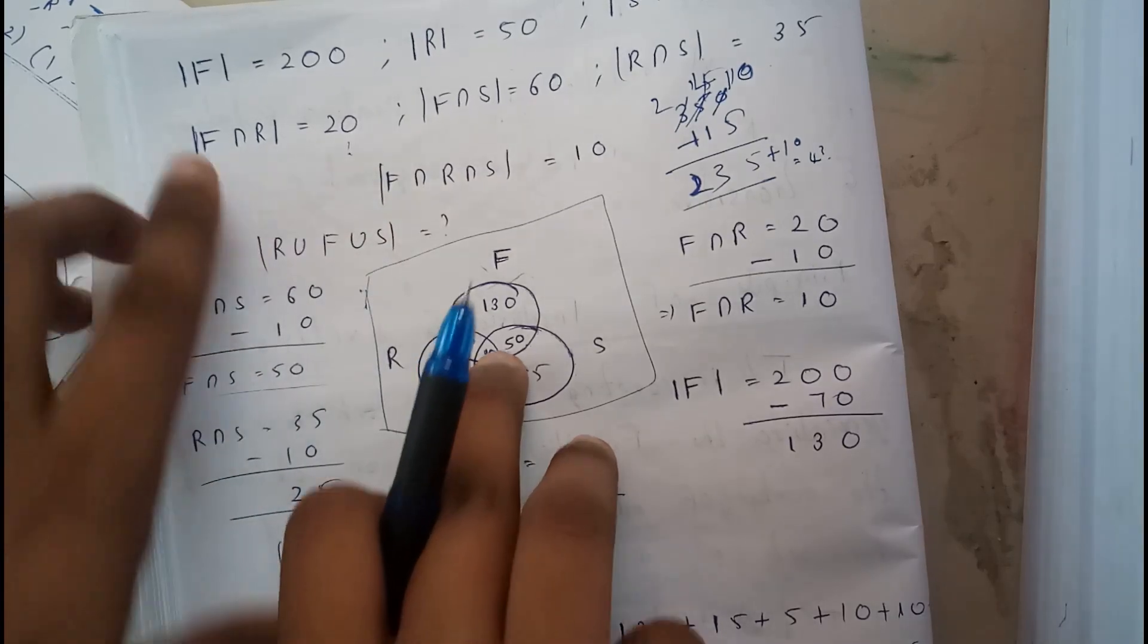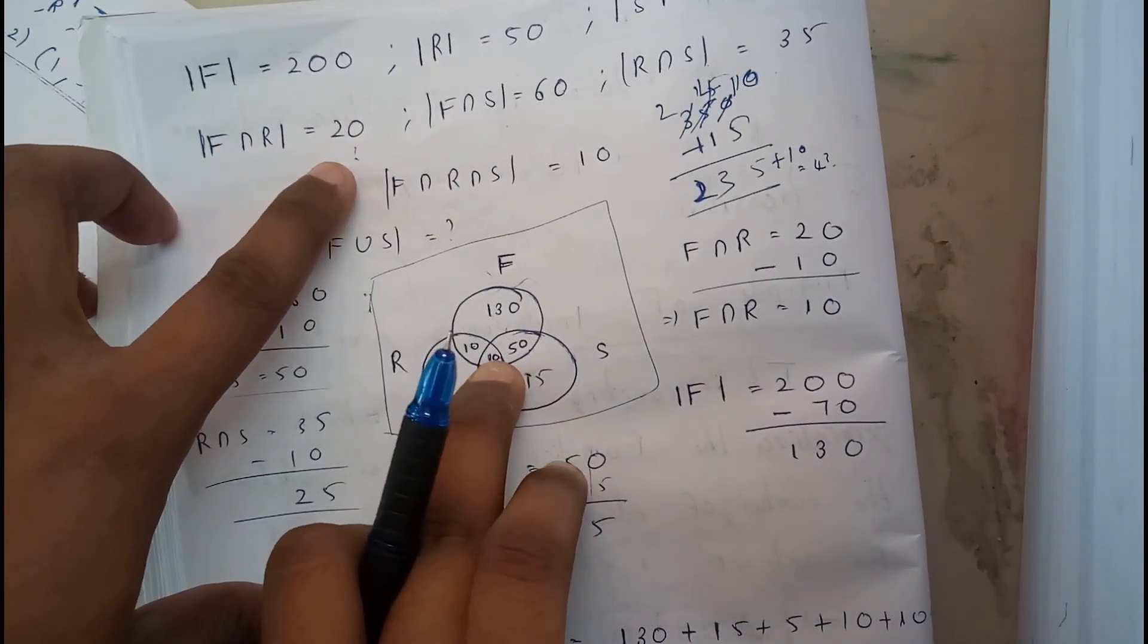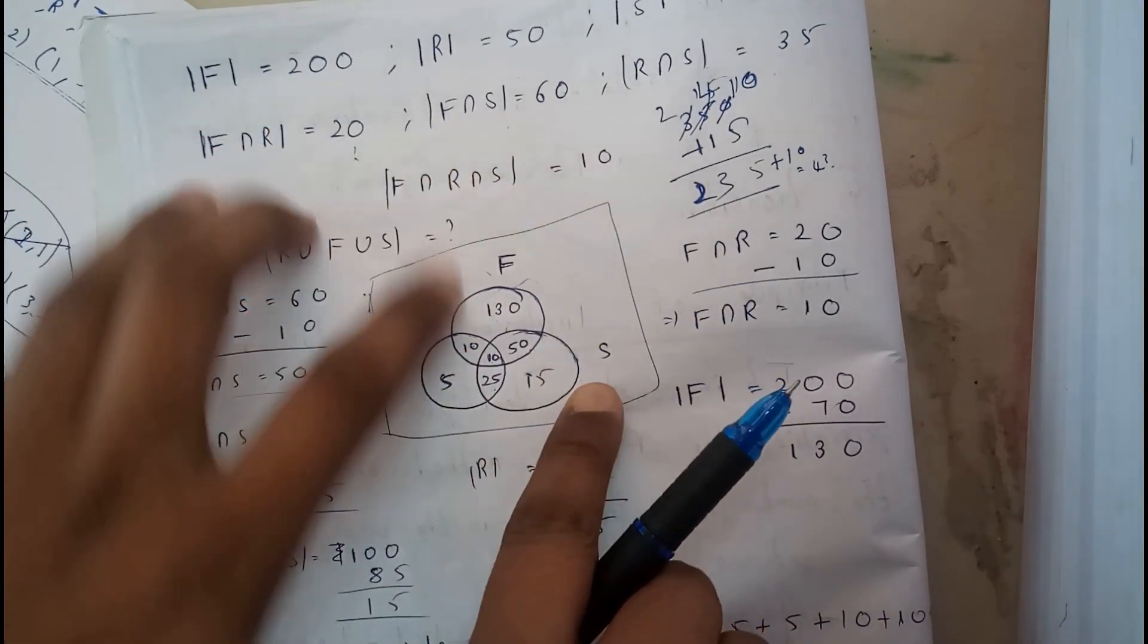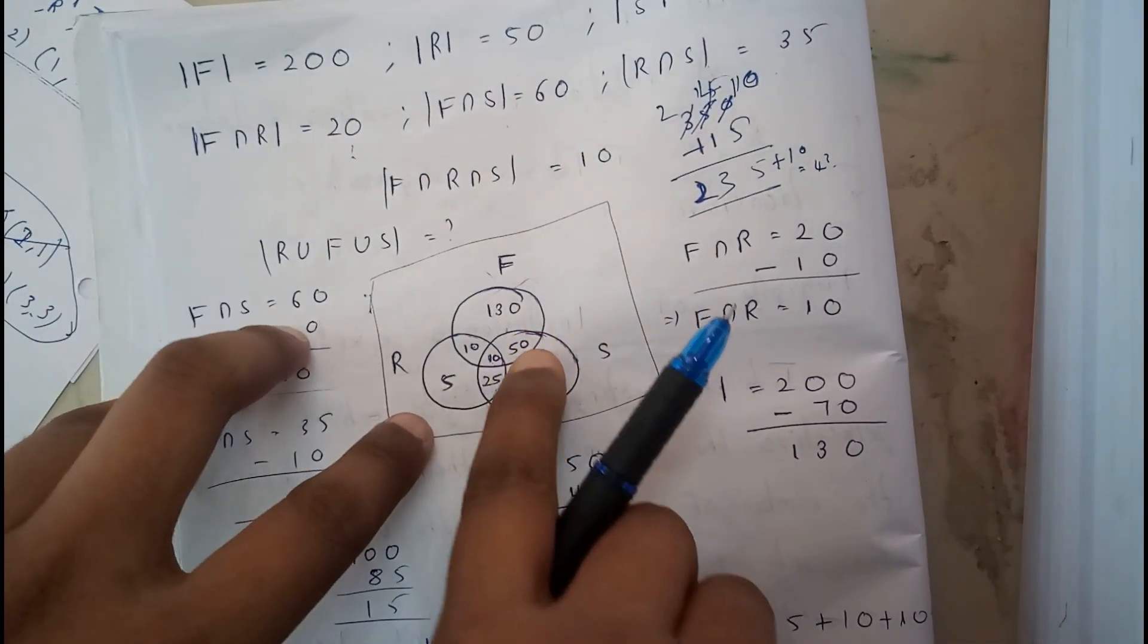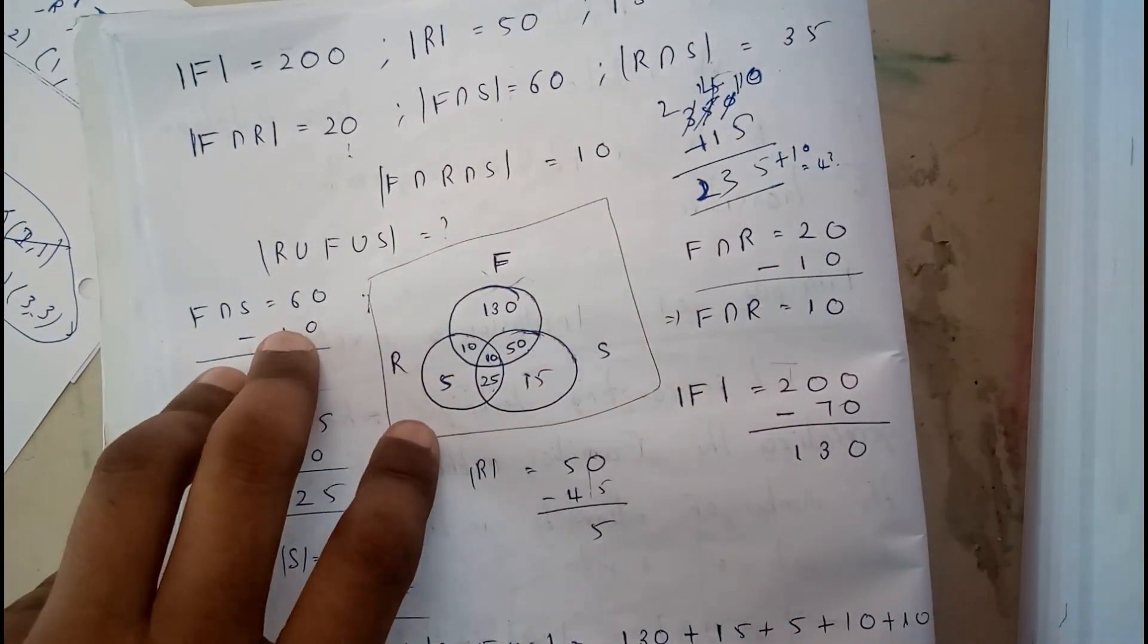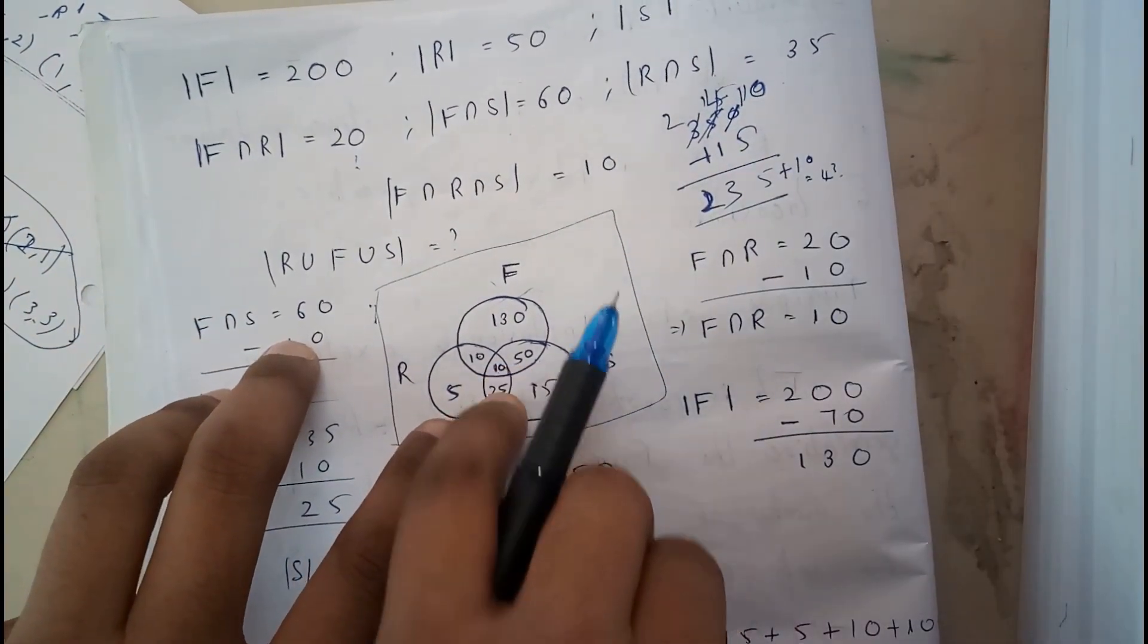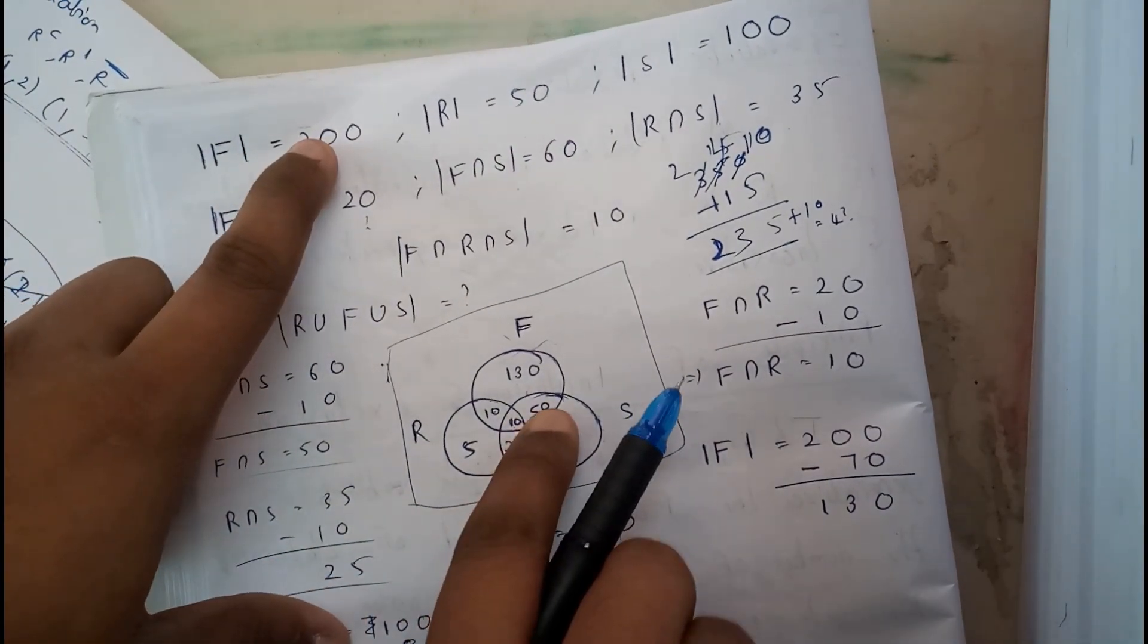F intersection R is 20, so subtracting this 10, the left out is 10. F intersection S is already occupied by 10, so 60 minus 10 is 50. You'll insert it right here. R intersection S: for these two, 35, already 10 is occupied, so left out is 25. F equals 200. Already 50, 10, 10 is occupied, that is 70. 200 minus 70 is 130, so we'll write 130 there.